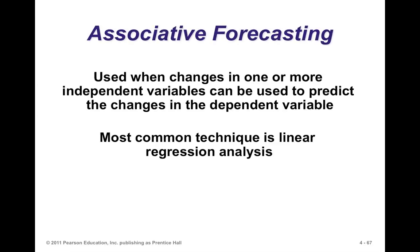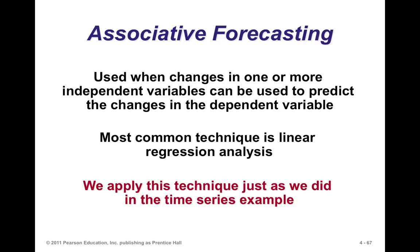Associated forecasting: in trend forecasting, the independent variable is time — the x-axis is time. In associative forecasting, two variables are associated with each other and we forecast one to make a prediction for the other. For example, interest rates and housing starts — if we can predict interest rates, we can predict housing starts from a formula because we believe there's an associative relationship between them. We use this when changes in one or more independent variables can be used to predict changes in the dependent variable.